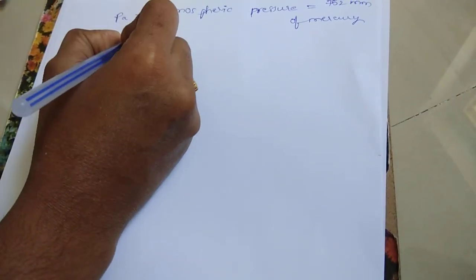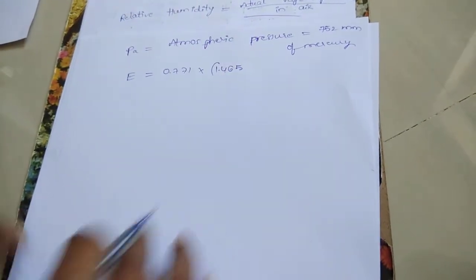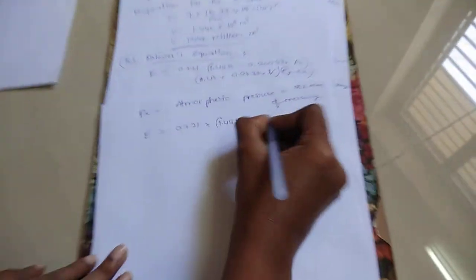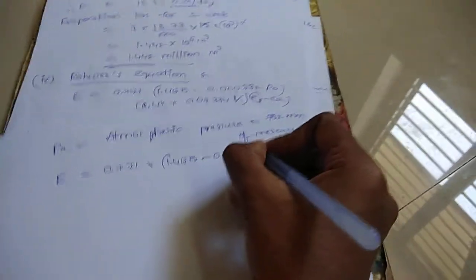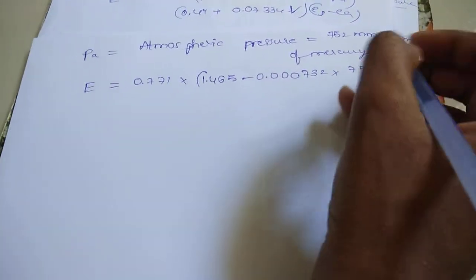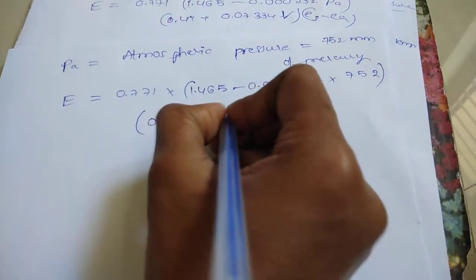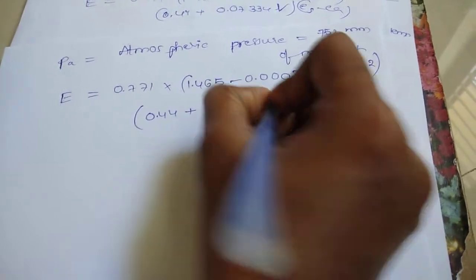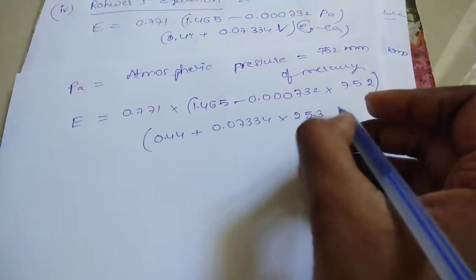E equal to 0.771 into 1.465 minus 0.000732 into PA. PA value is 752 mm of mercury into 0.44 plus 0.07334 into capital V. Capital V equal to 25.3.